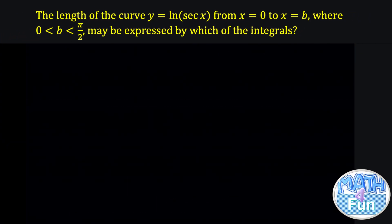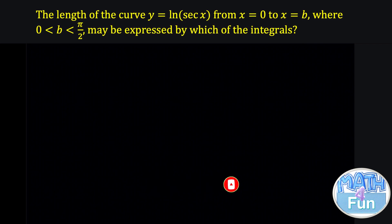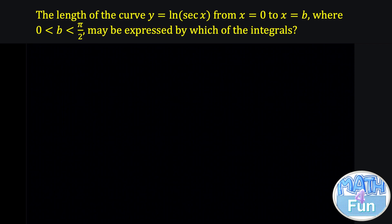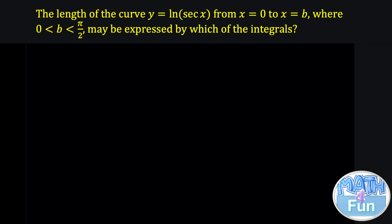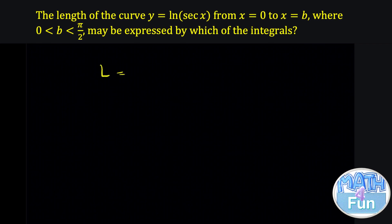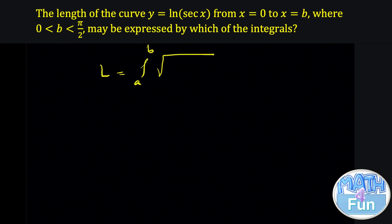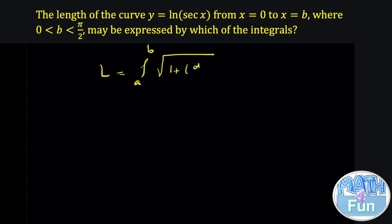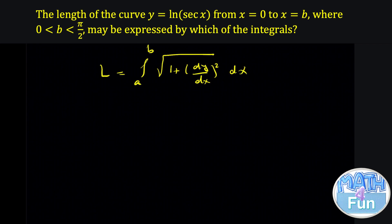Look at this question. The length of the curve y equal to ln of secant x from x equal to 0 to x equal to b, where b is between 0 and pi over 2, may be expressed by which of the following integral? The integral we use to find the length of the curve is l equal to the integral from a to b of the square root of 1 plus dy/dx squared, all dx.